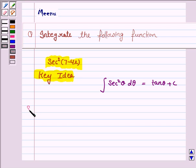Let us now move on to the solution. Let I be the integral secant square 7 minus 4x dx. Now here theta is 7 minus 4x.